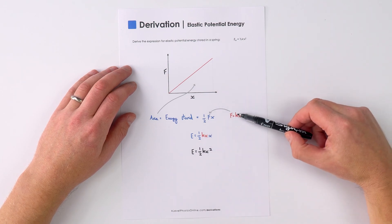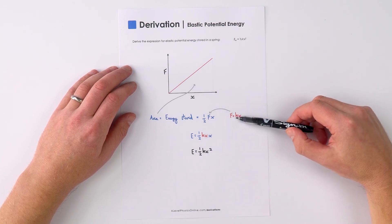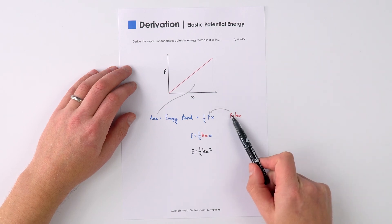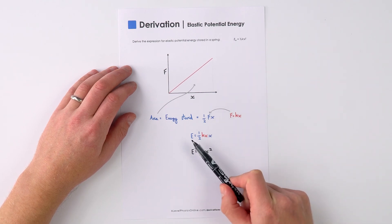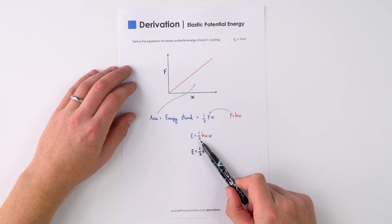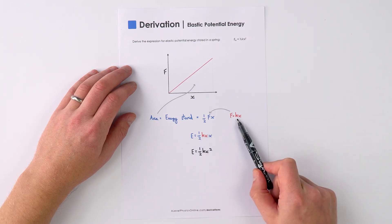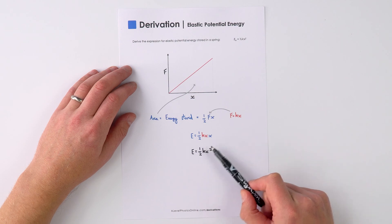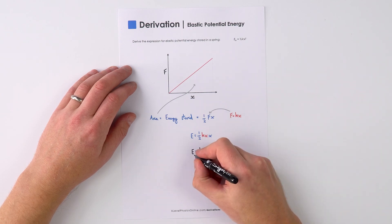And of course, we have a spring constant k, and f equals kx, so we can substitute f into here to say that the energy stored is equal to a half times kx multiplied by x, which is therefore just equal to a half kx squared.